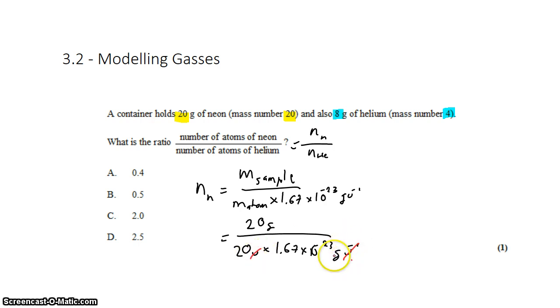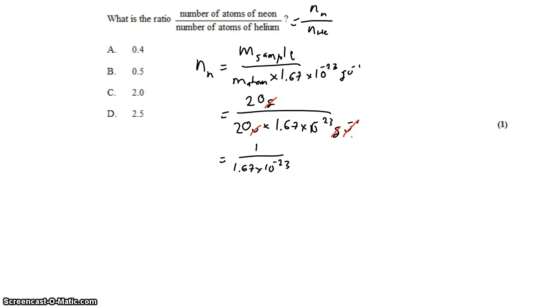Amu cancels with per amu. Gram cancels with gram. And what we get is 1 divided by 1.67 times 10 to the negative 23 atoms. And I'm leaving that 1.67 in there intentionally. We could do the calculation, but I'm going to leave it there for now.